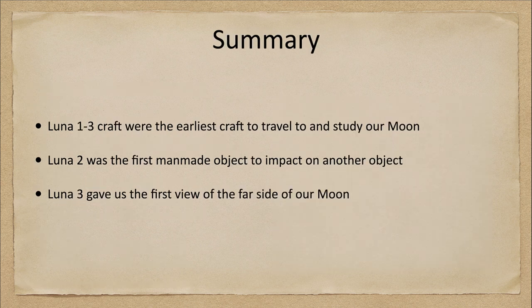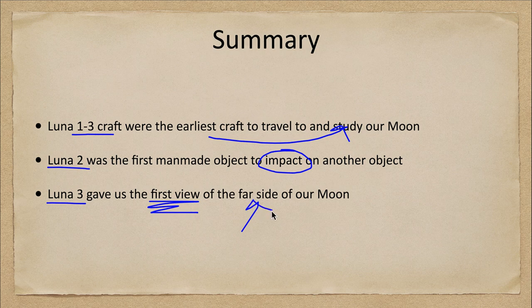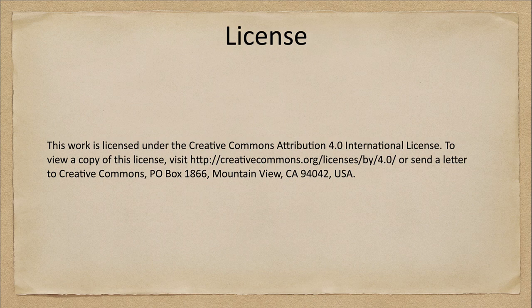Luna 1 through 3 were the earliest craft to travel to and study our moon. Luna 2 was the first man-made object to impact on any other celestial object, and Luna 3 gave us our very first view of the far side of the moon. That concludes this discussion of the Luna 1 through 3 spacecraft. We'll be back next time for another lecture on exploration of the solar system — have a great day everyone, and I will see you in class!